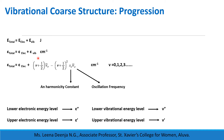Substituting the value of vibrational energy, the total energy for the molecule can be written as: ε_total = ε_electronic + (v + ½)ν̄_e − (v + ½)² × x_e × ν̄_e, in units of cm⁻¹. Here, v is the vibrational quantum number, x_e is the anharmonicity constant, and ν̄_e is the oscillation frequency.